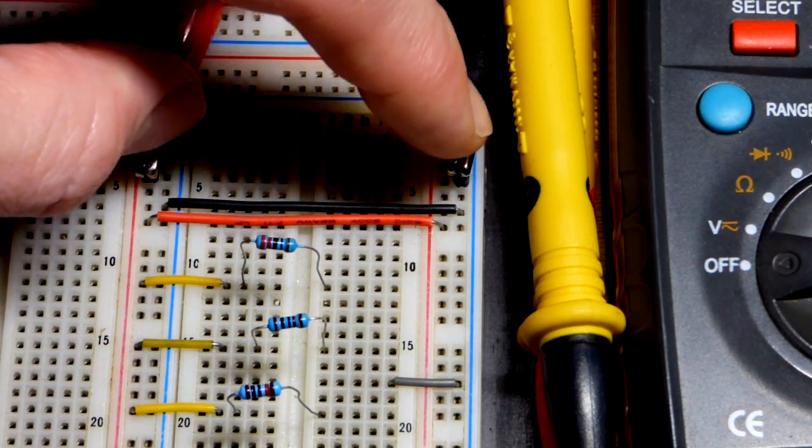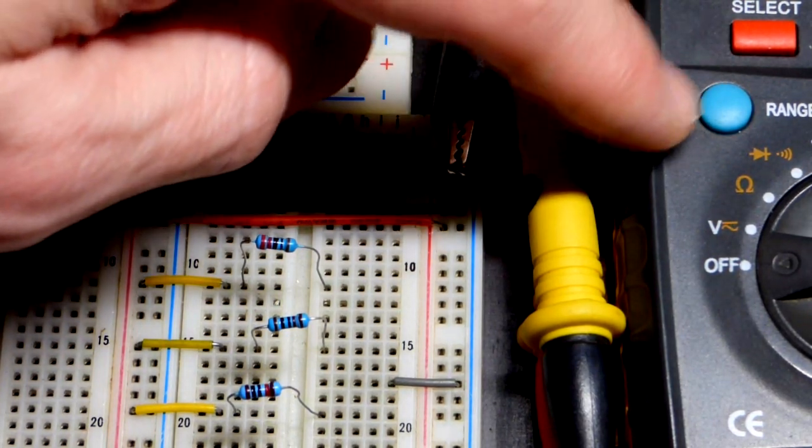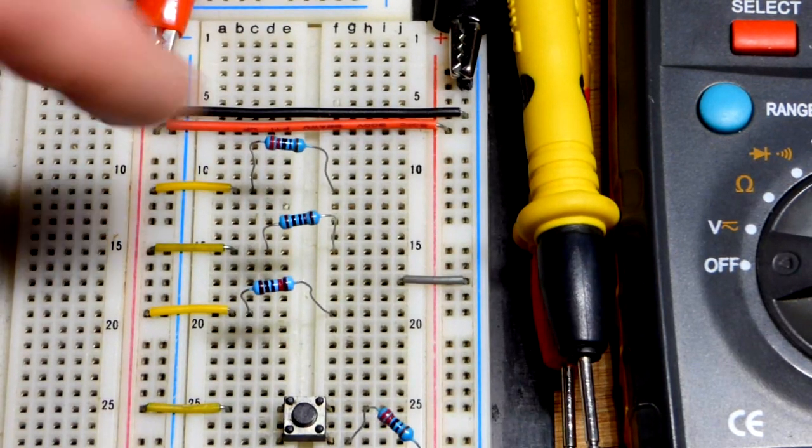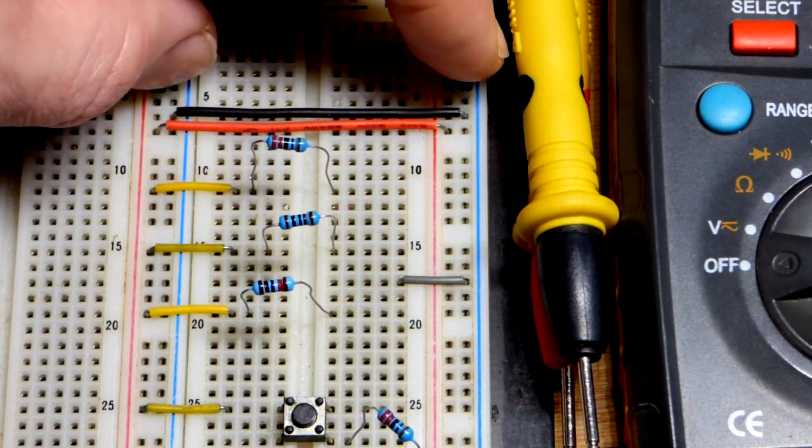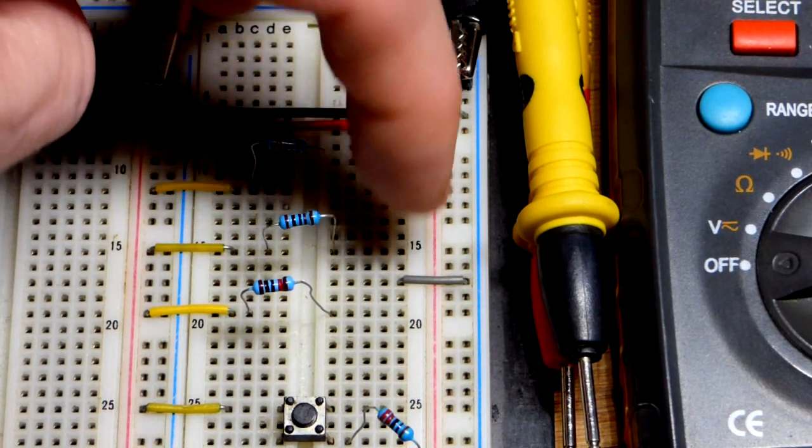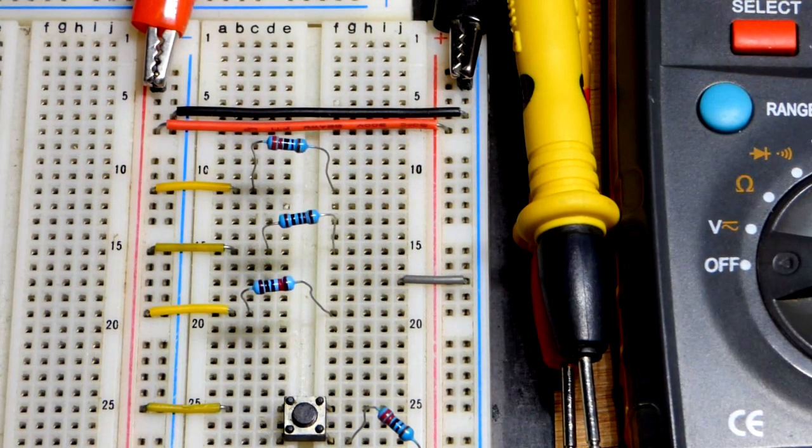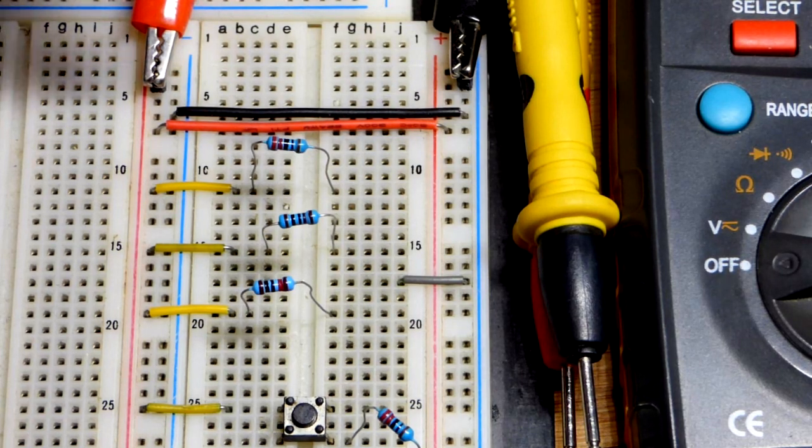They generally don't limit current and you need current limited before you measure it. So we're going to have resistors in this video limiting the current from the power supply. You can see that we have it open on one side. You need an open circuit to take a current measurement.